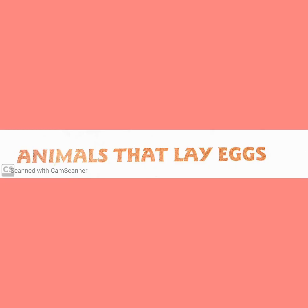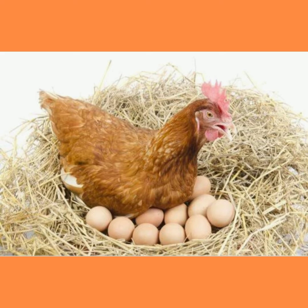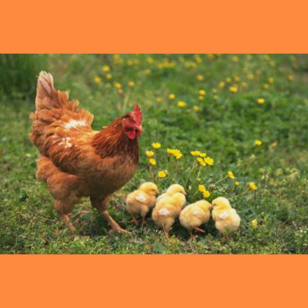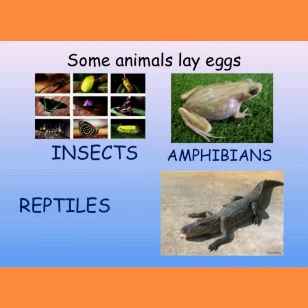Let's start with animals that lay eggs. Animals such as birds lay eggs to reproduce. These eggs need to be kept warm till they hatch. Hatching is the process by which an egg is broken and a chick is born. Once the eggs hatch, the young ones come out. Birds build nests to lay eggs and raise their young ones. Insects, reptiles and amphibians also lay eggs to reproduce.